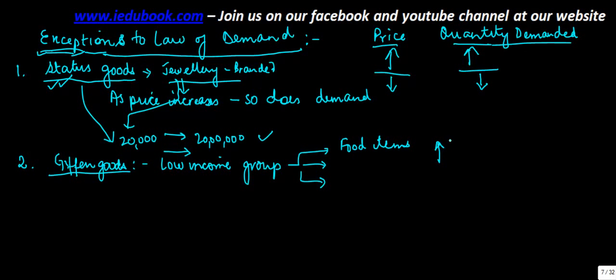So whenever there is an increase in the price of these basic necessities, because these are mainly the food items, the proportion of the income which the people spend to earn this also goes down.